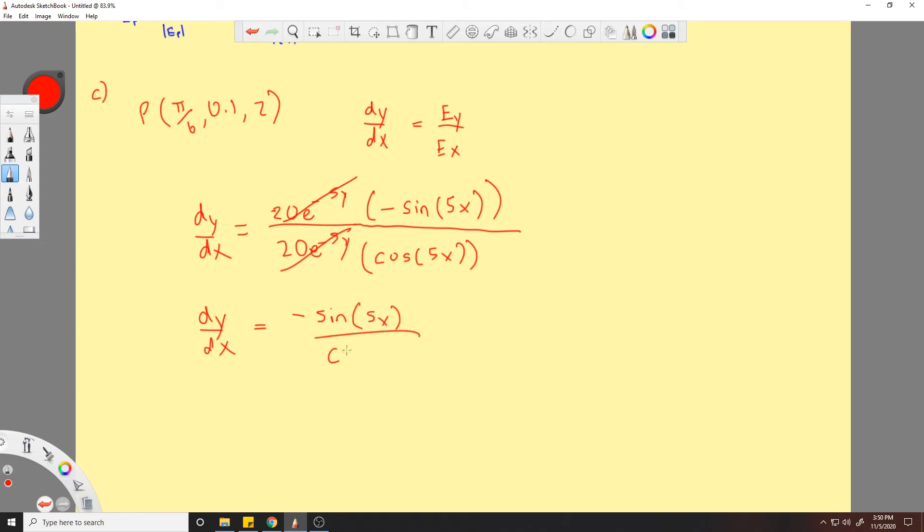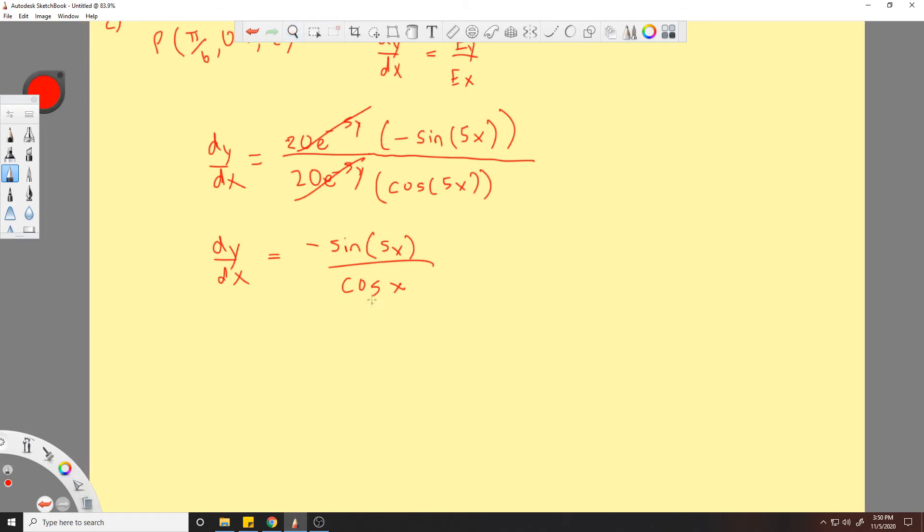And this is a tangent of 5x. So, but I'll leave it like this for now. I mean, you do realize that this is going to be a negative tangent because sine over cosine with the same argument, right? We'll bring over the dx.